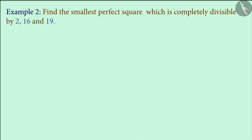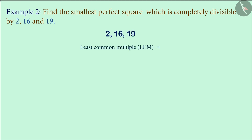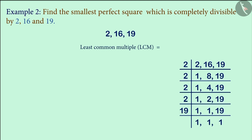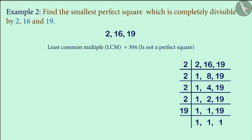Let us see another example. Find the smallest perfect square which is completely divisible by 2, 16 and 19. If we had to find only a number that was divisible by these three numbers, then we would have to find the LCM of these three numbers. Thus, we would receive the number 304. The number 304 is not a perfect square, but here we need a perfect square.